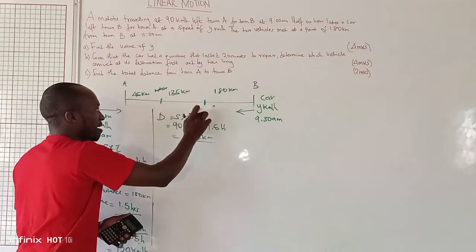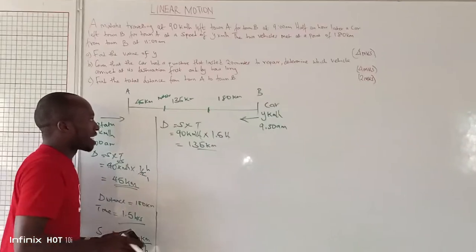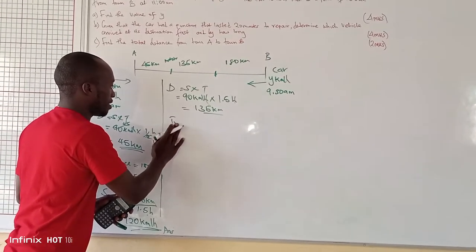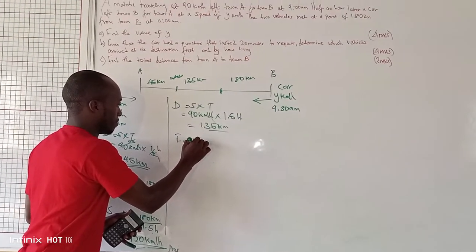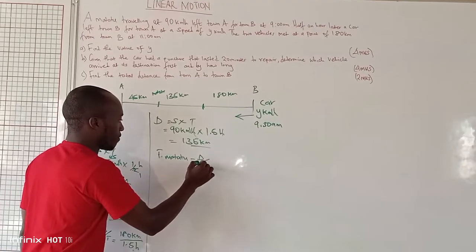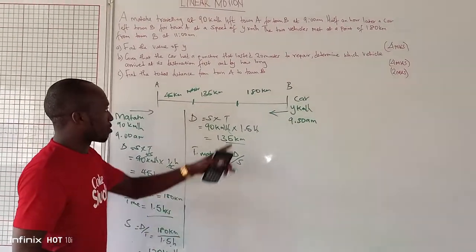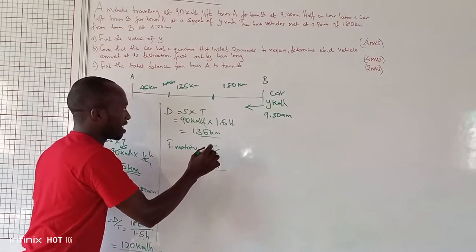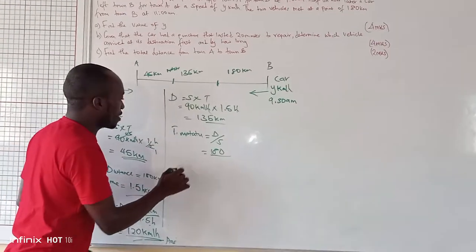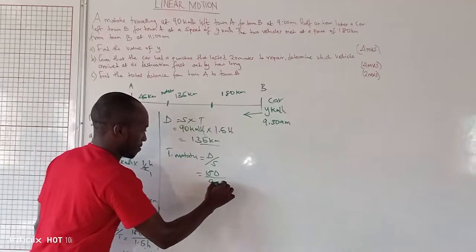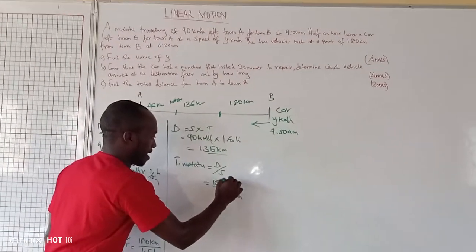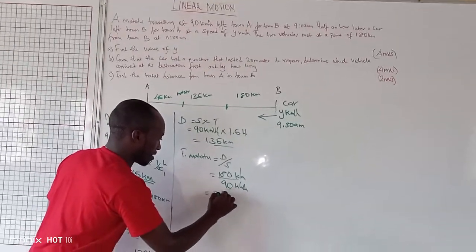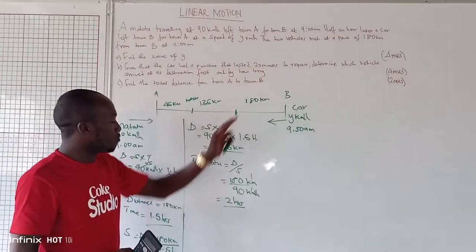At the meeting point, the matatu still needs to travel 180 km to reach town B. Time taken by the matatu to reach town B equals distance over speed: 180 km divided by 90 km/h equals 2 hours. So the matatu took 2 hours from the meeting point to reach town B.